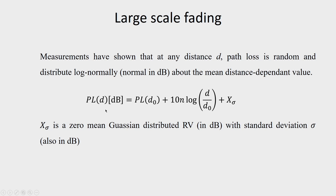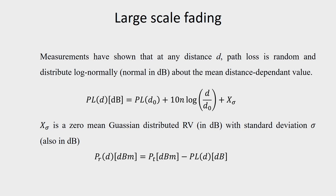Once we have this expression for path loss, we can find out the received power in dBm, which is equal to transmitted power in dBm minus path loss at a distance d expressed in dB. Here dBm is with reference to 1 milliwatt — for example, 0 dBm represents 1 milliwatt, 30 dBm represents 1 watt. This received power PR is very important to know, because the design of the system, particularly the RF system in a cellular communication system, depends on what is the minimum received power with which the system would operate satisfactorily.